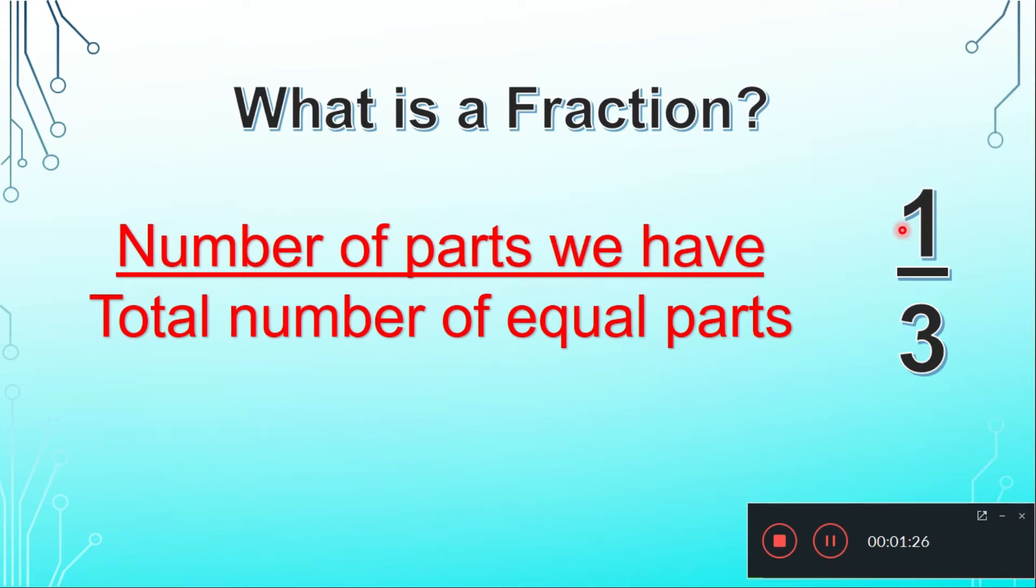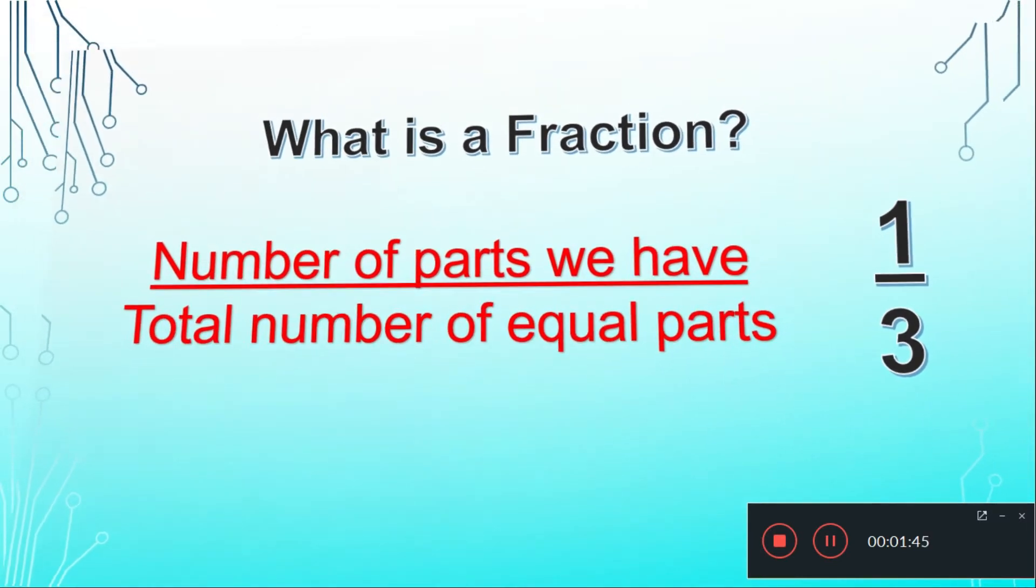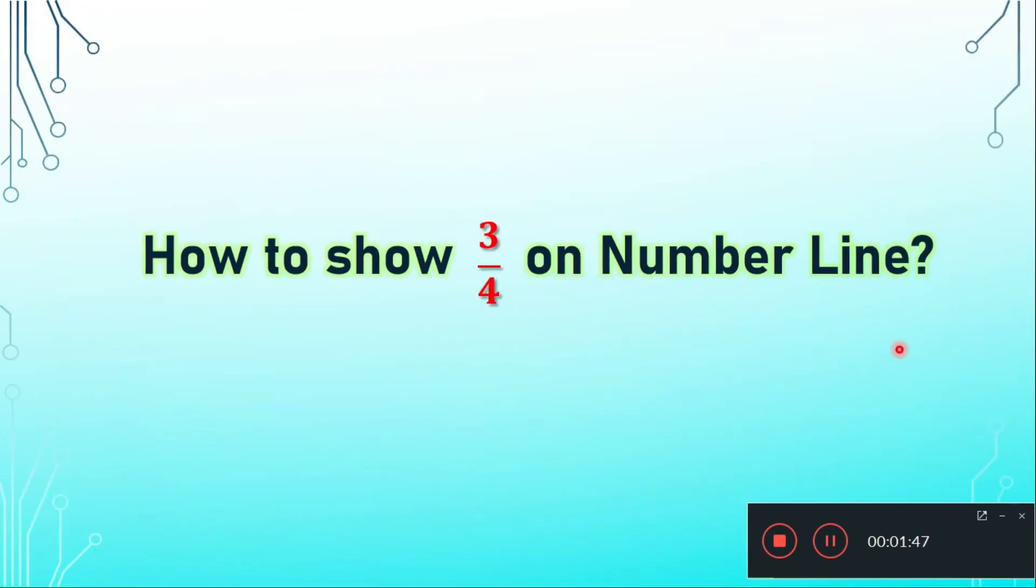We represent fraction like this: suppose I have a chocolate or I have a cake and I want to distribute that cake in three persons equally, so each person will get one part out of three. So this is the fraction one part out of three, so how to write down that? 1 upon 3.